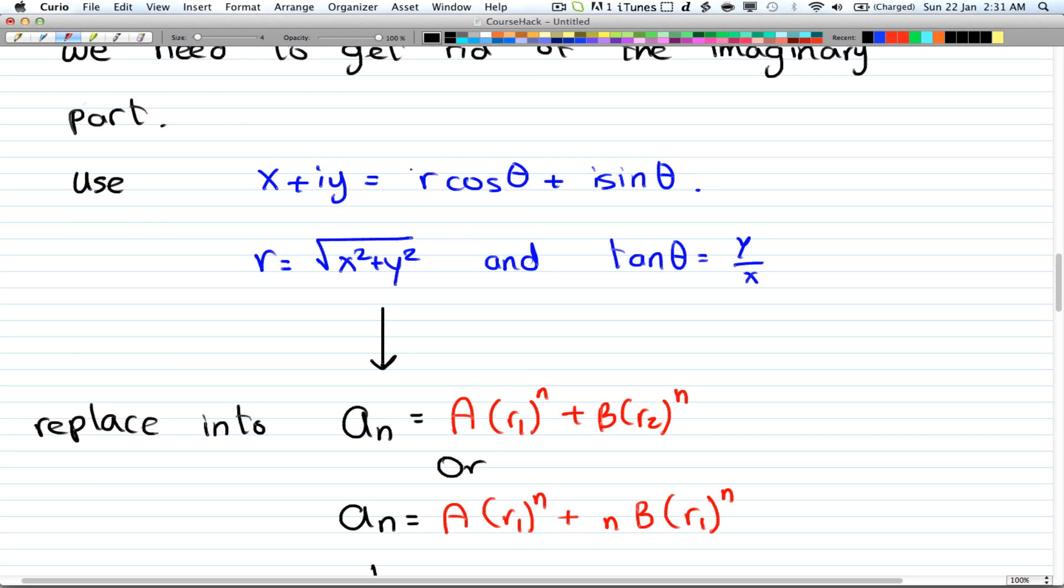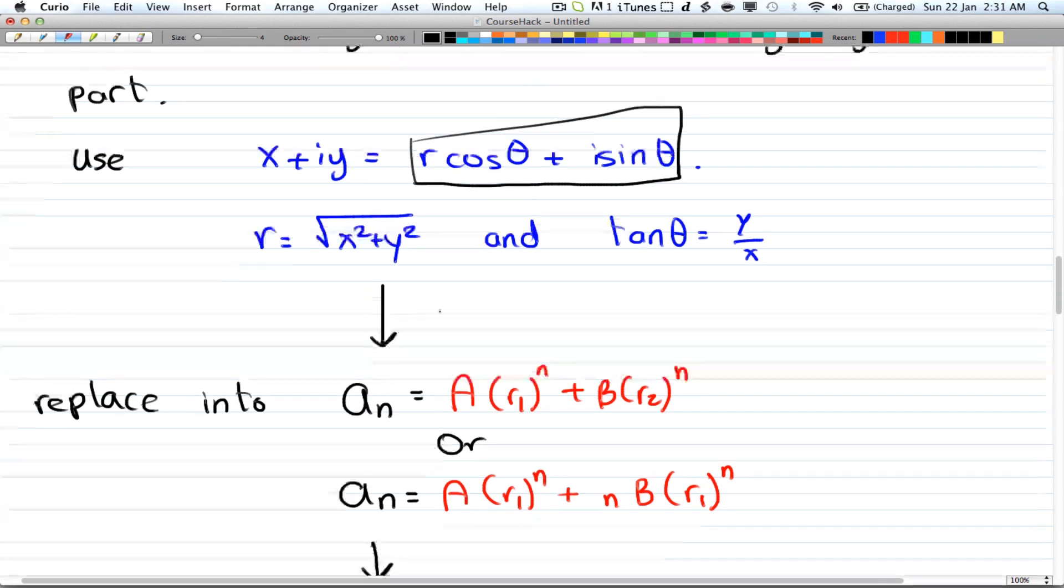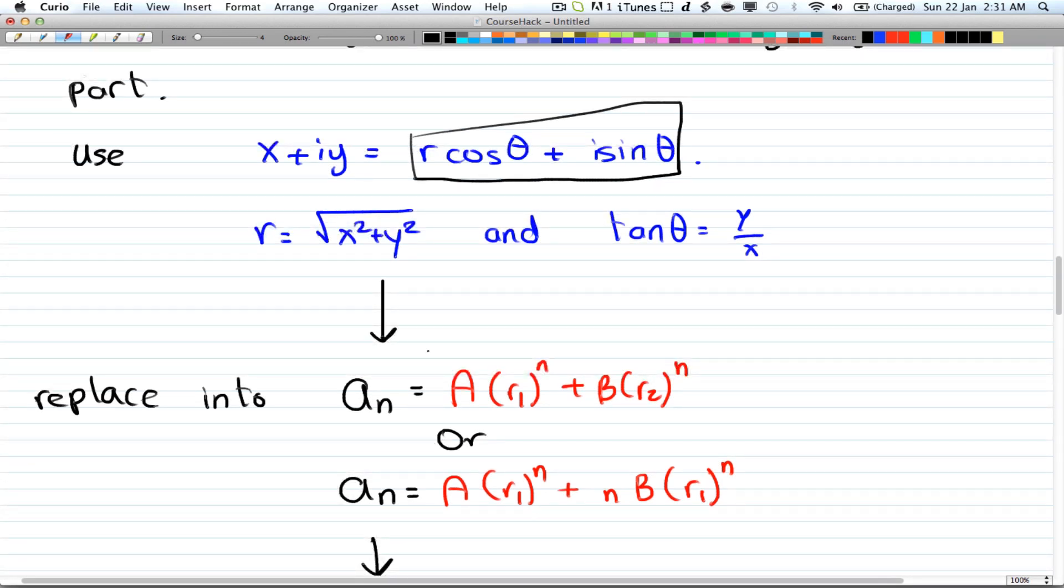You're going to have to solve it into this formula here. So you're going to do that for both of your roots, r₁ and r₂ if they're distinct. And you're going to find this form here.